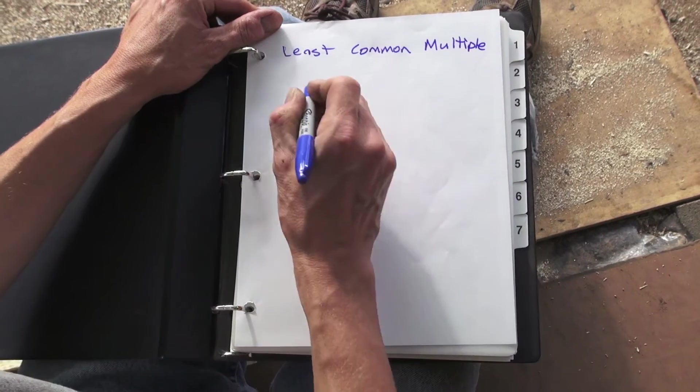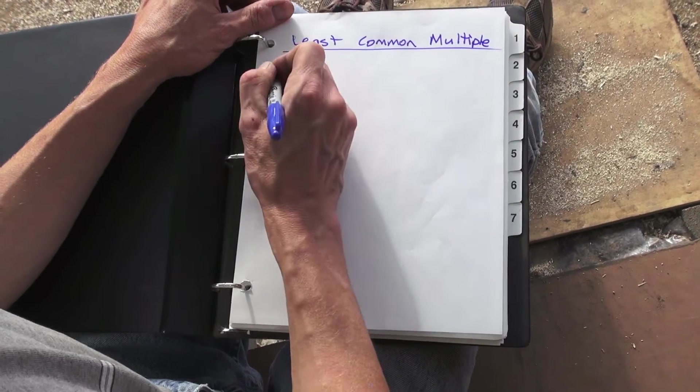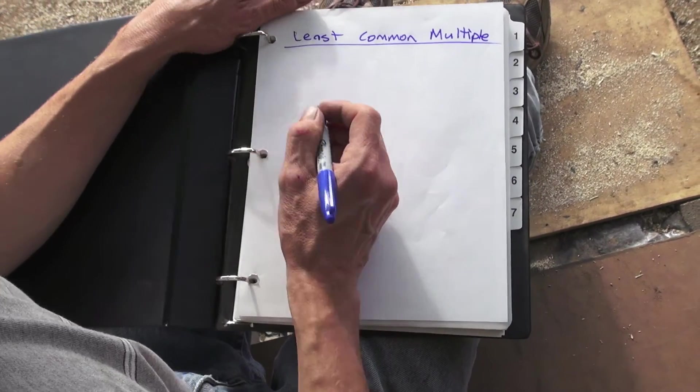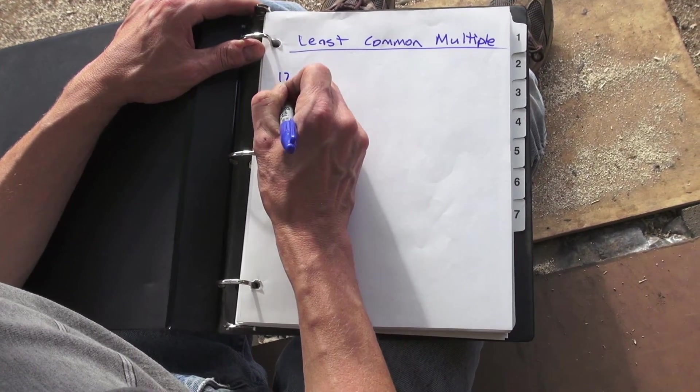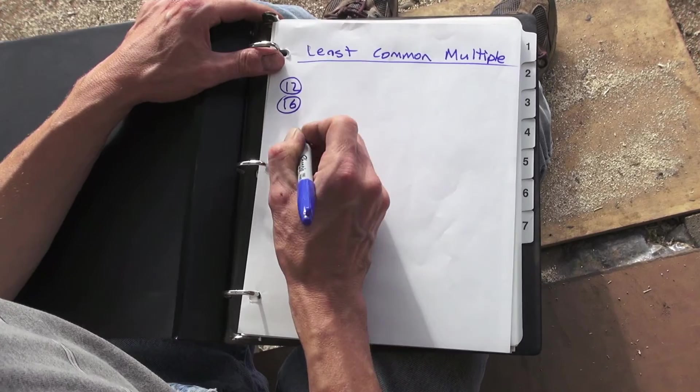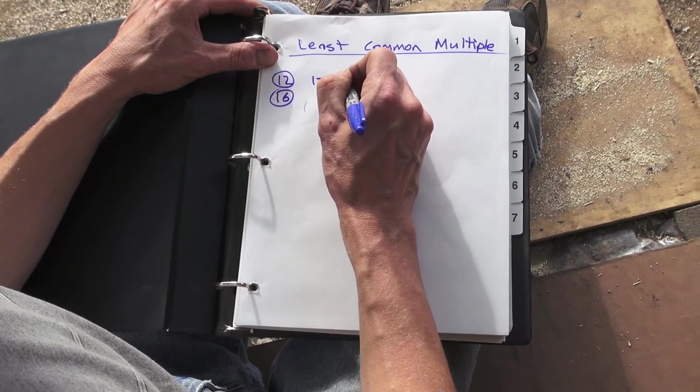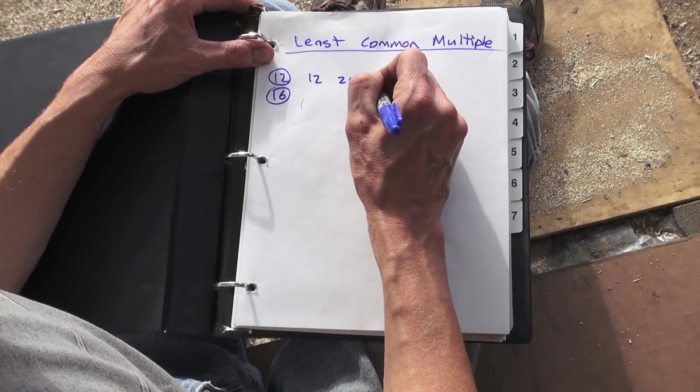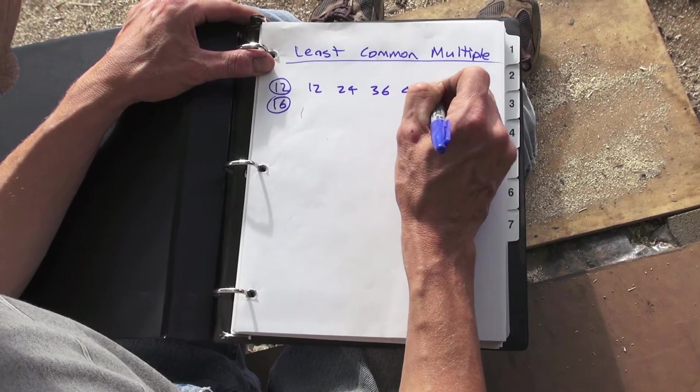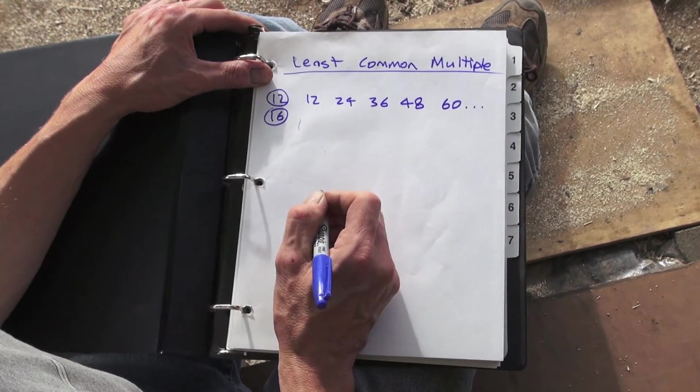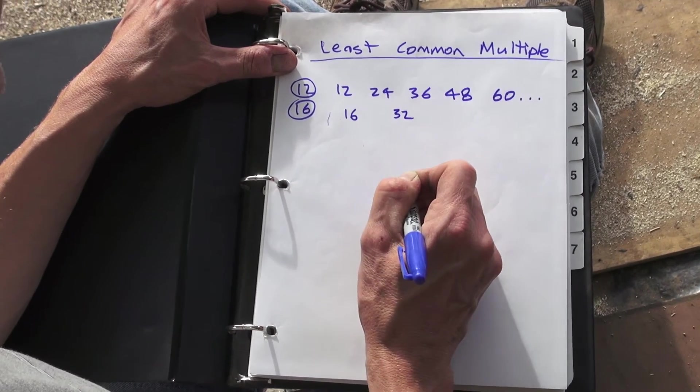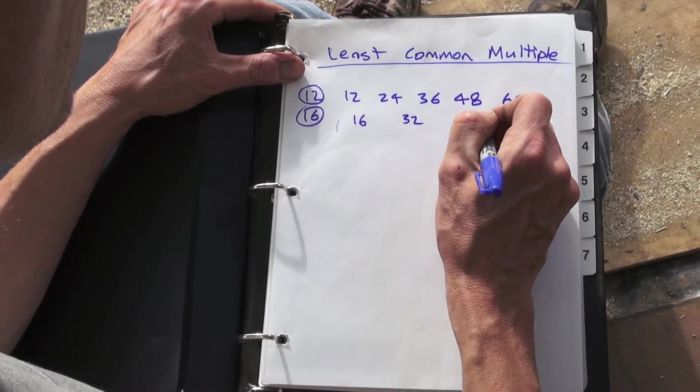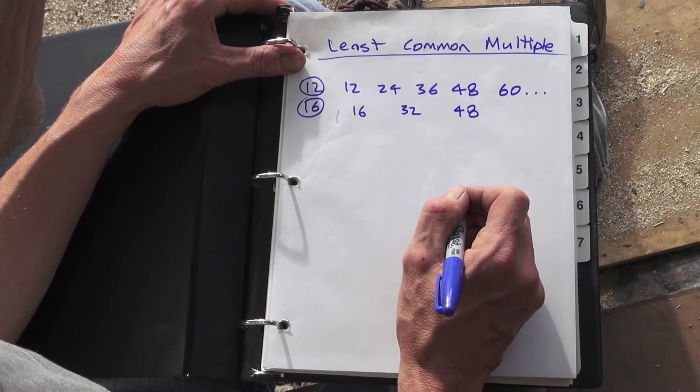Least common multiple. A couple different ways you can find the least common multiple of two numbers. One is basically just to do what's done on the tape measure there, which is just write them out, make a list of each one. Write out some multiples of 12: 12, 24, 36, 48, 60, and multiples of 16: 16, 32, 48, and so on, right?